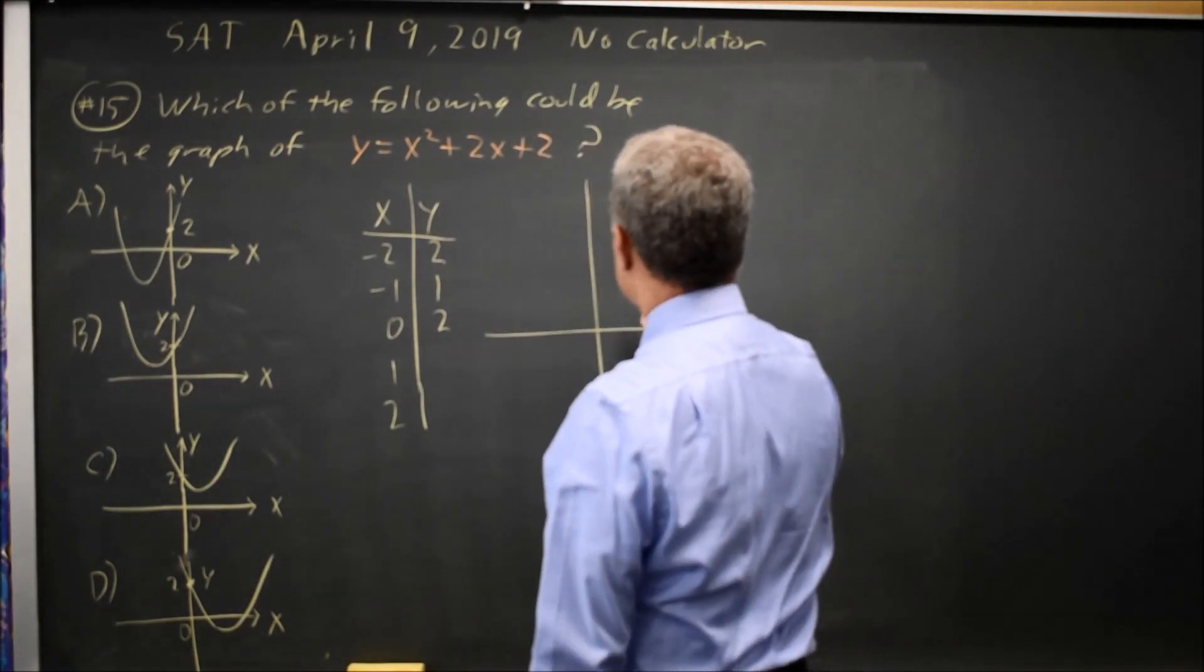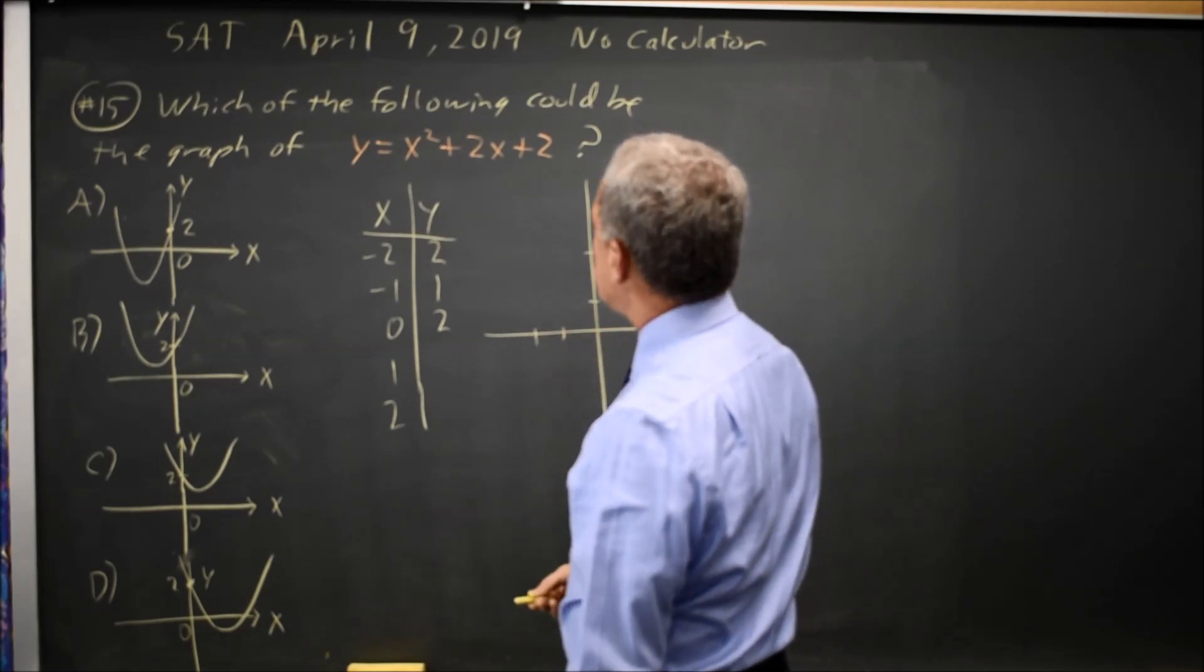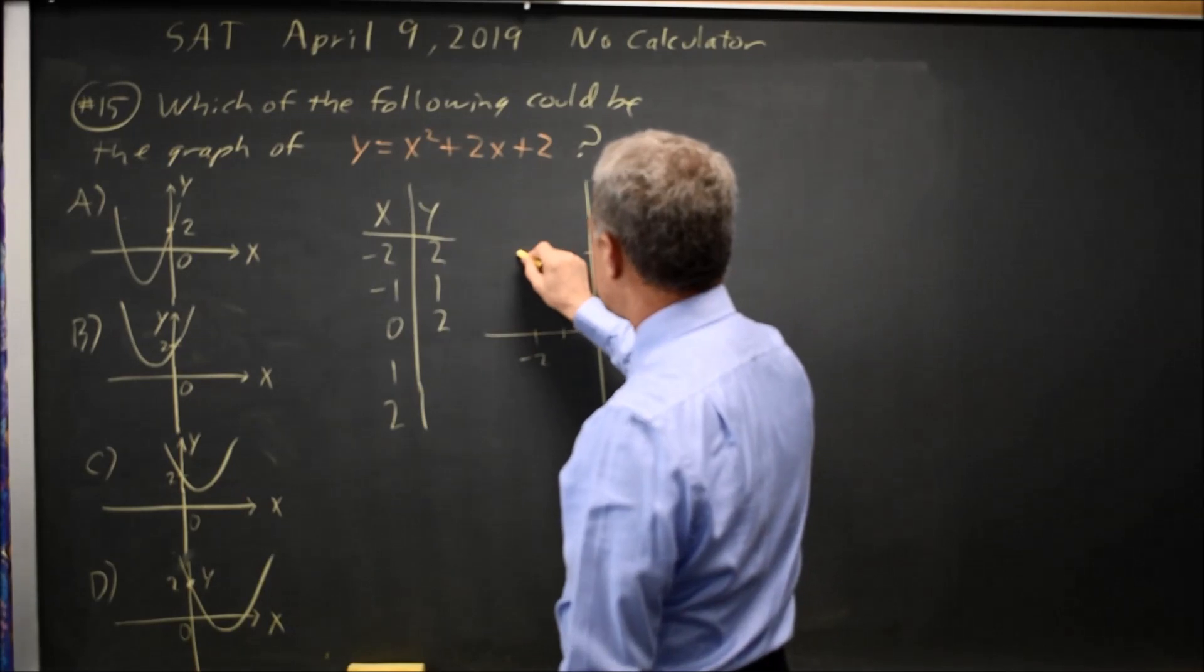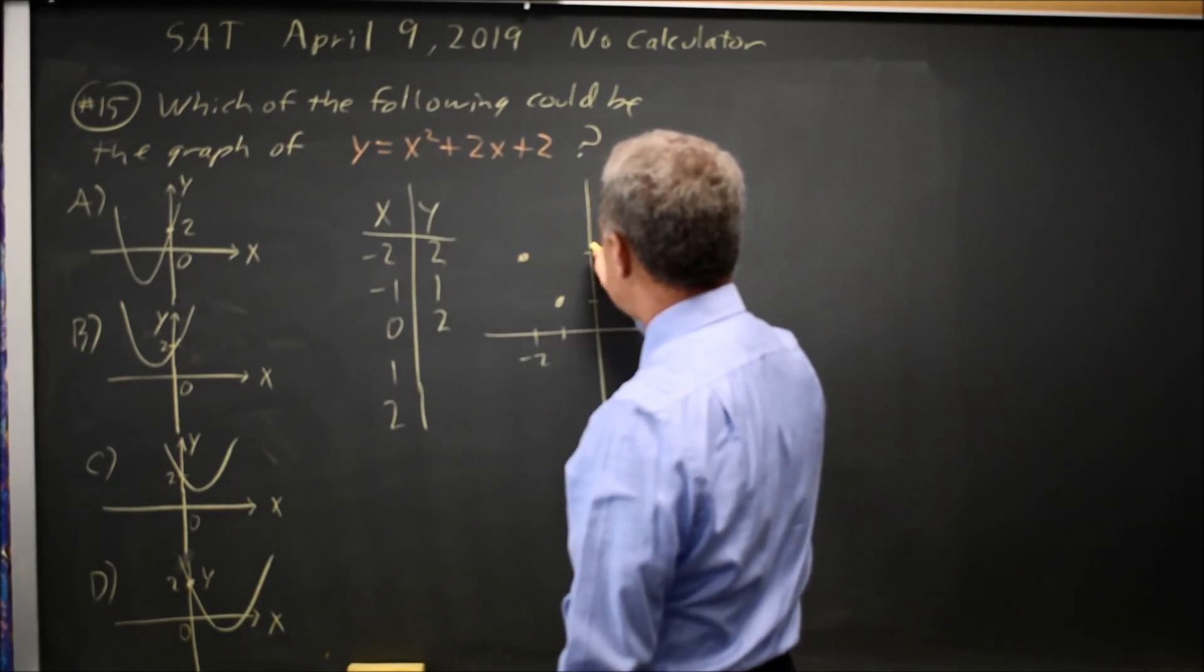That's enough to tell that the graph is at negative 2, 2; negative 1, 1; and 0, 2.